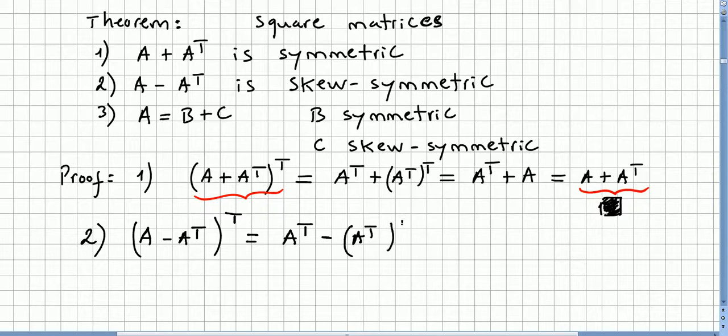Right, and now I have to prove that this is skew-symmetric, so I'm going to factor out minus one. So that will be minus (A minus A transpose).